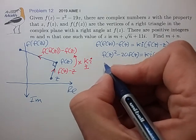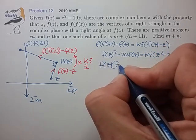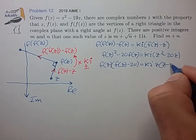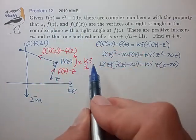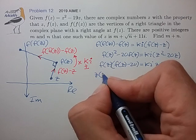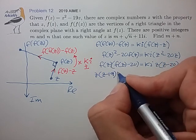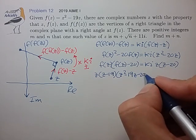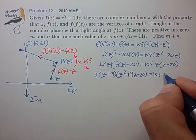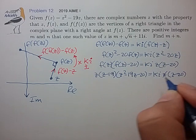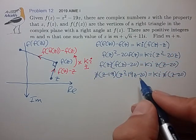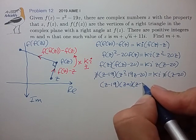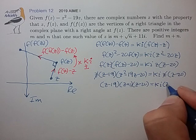Let's pull out f(z) as a factor and try to simplify. We get f(z)·(f(z) minus 20) equals ki·z·(z minus 20). Doing the final substitution of f(z) = z² - 19z into the left side gives z(z - 19)·(z² - 19z - 20) equals ki·z·(z - 20). We get a cancellation of the z's, and it looks like we can factor z² - 19z - 20 as (z - 20)(z + 1), giving (z - 19)(z + 1)(z - 20) equals ki·(z - 20).